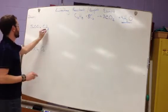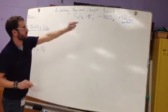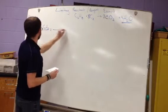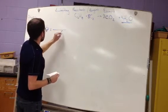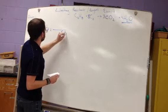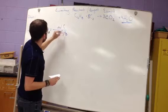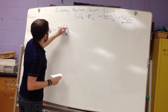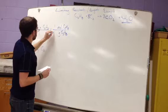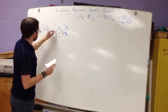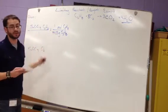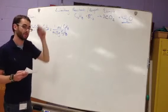First thing you do is you convert the givens into what you're looking for, the water. So we would go grams on the bottom, moles on the top, and it's one mole for 44.03 grams. We get this number from the molecular mass from the periodic table.